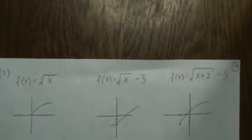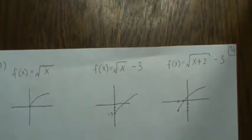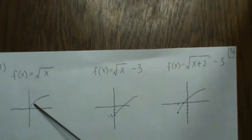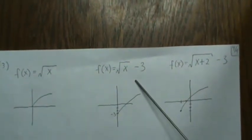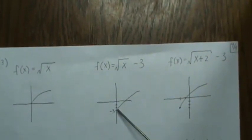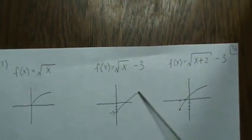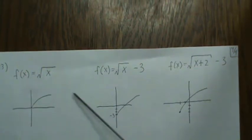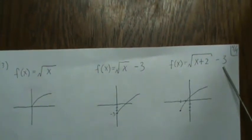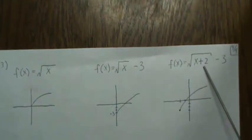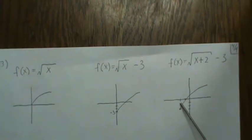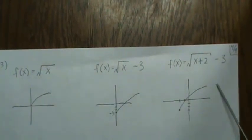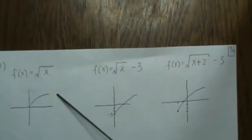For the square root function, if we subtract three it goes down three. For one that says move it left two and down three, you start there and it has the same general shape.